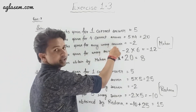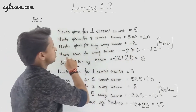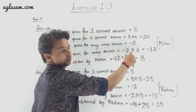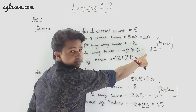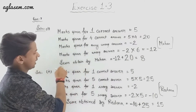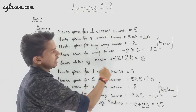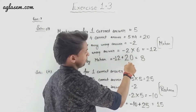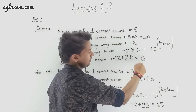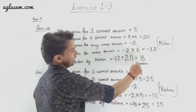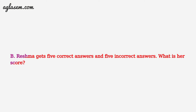Marks given for every wrong answer is minus 2. Mohan got 6 wrong answers, so marks for wrong answers is minus 2 multiplied by 6, which equals minus 12. Score obtained by Mohan is minus 12 plus 20, which gives 8. Total marks scored by Mohan is 8.